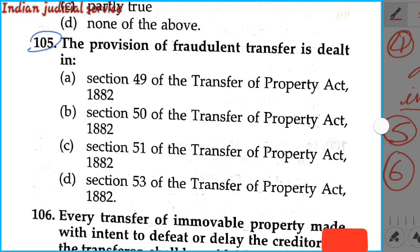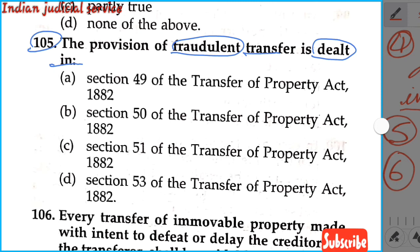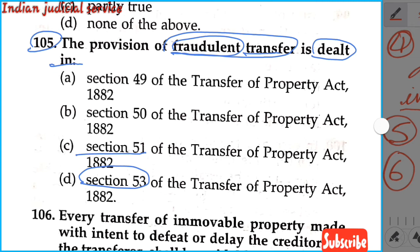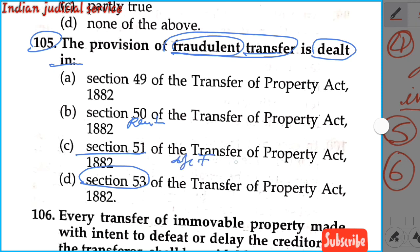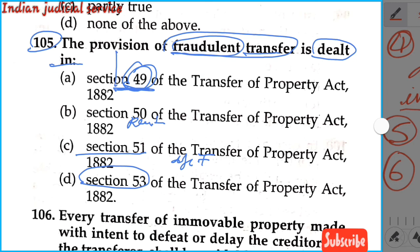Question number 105: The provision of fraudulent transfer is dealt with in section 53. Section 53 deals with fraudulent transfer. Section 51 deals with improvements made by a bona fide holder under defective title. Section 50 deals with rent bona fide paid to a holder under defective title. Section 49 deals with transfer of right under policy. Fraudulent transfer is directly under section 53, which comes after the Doctrine of Lis Pendens in section 52. Our answer is option D.